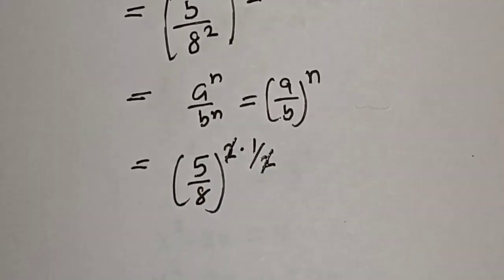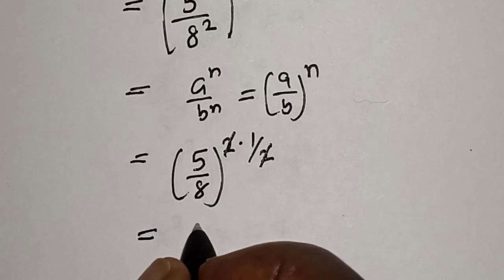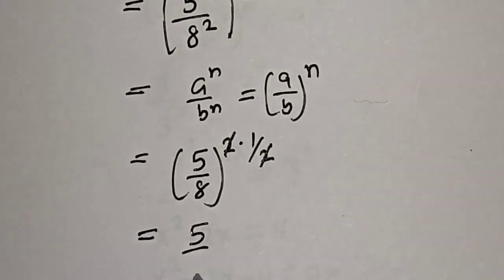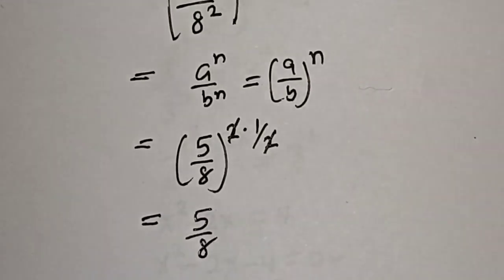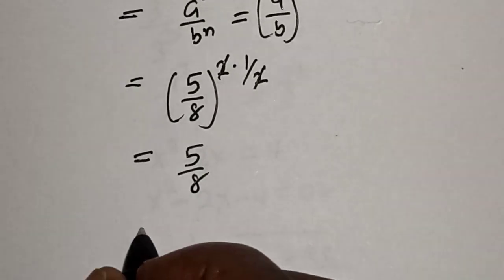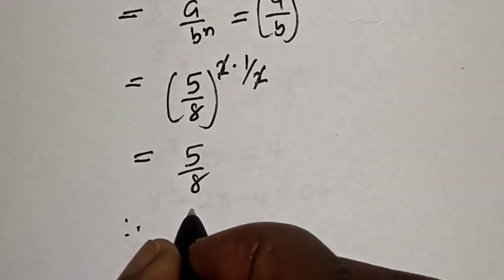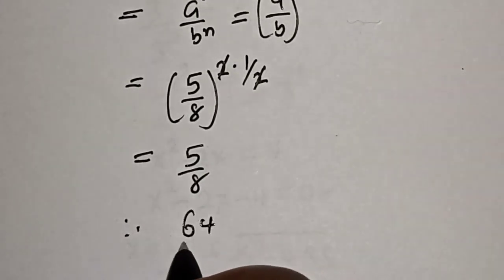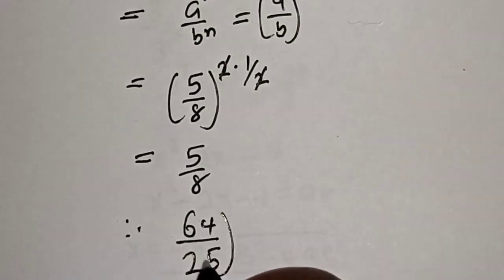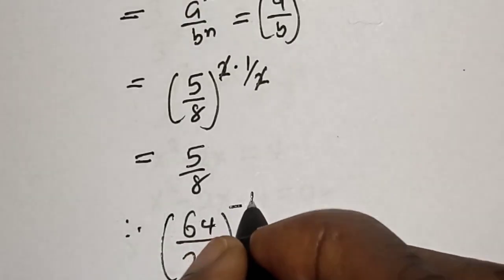Therefore, 64 divided by 25 to the power of minus 1 over 2 is equal to 5 over 8.